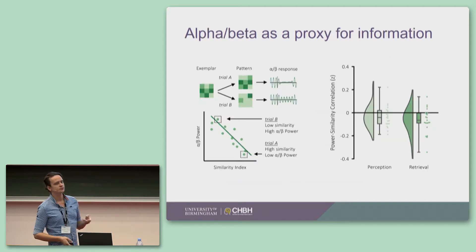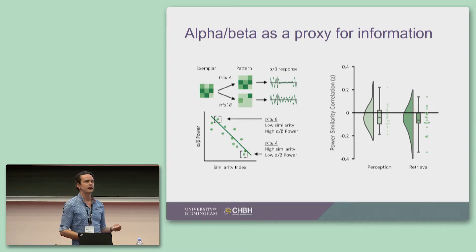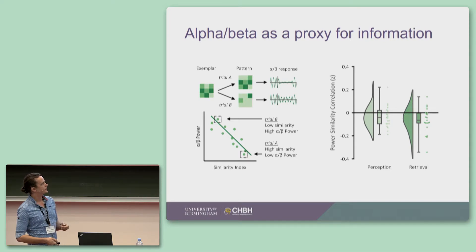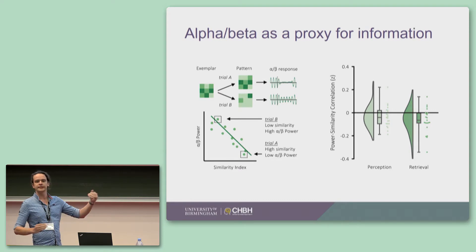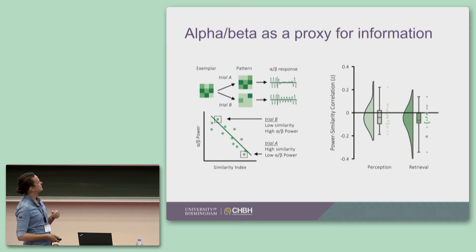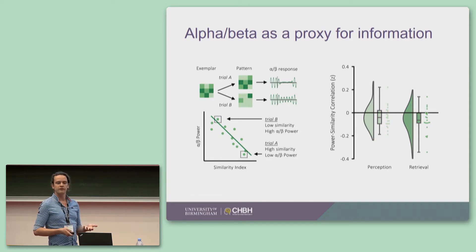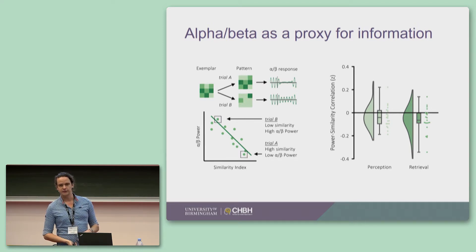But the critical question is whether these two markers correlate — so on those trials where there's a large amount of alpha-beta power decrease, is there more stimulus-specific information in the fMRI? For each subject, we extracted our measure of alpha-beta power on a single trial, extracted our measure of stimulus-specific information on that trial, and correlated across trials — giving us a correlation coefficient for each subject. What we find is when you are perceiving a video, we get a very nice negative correlation across subjects, suggesting that the more information you represent in the cortex, the greater the desynchronization in these alpha-beta oscillations.